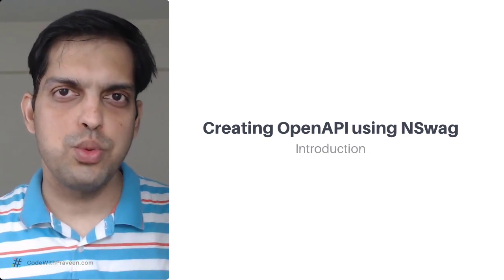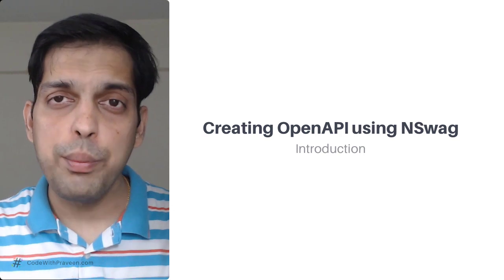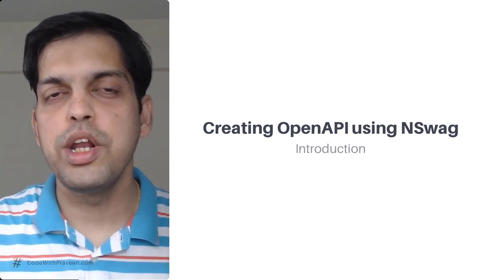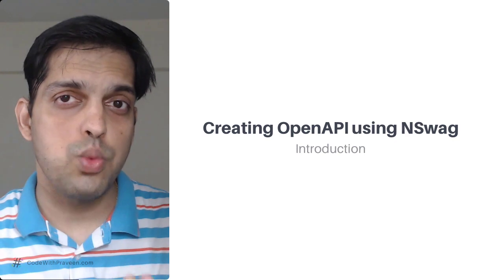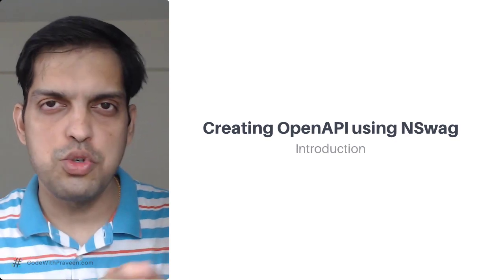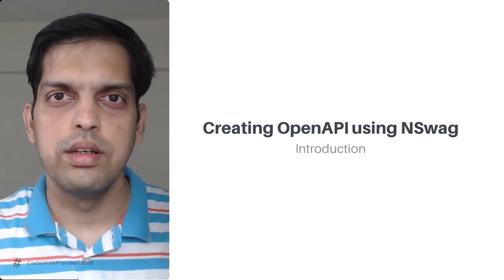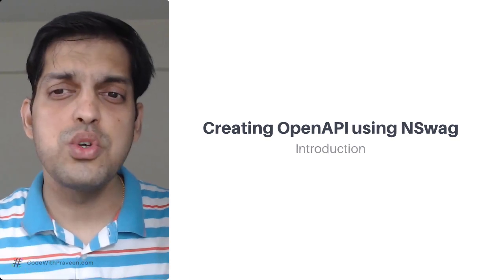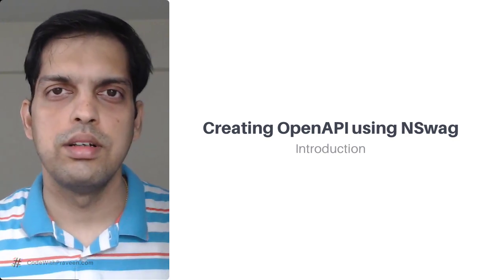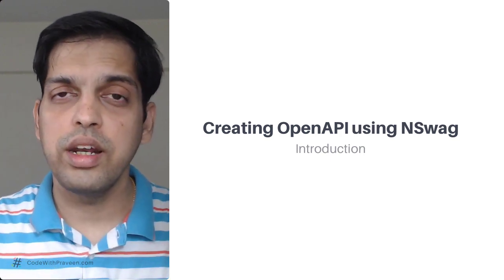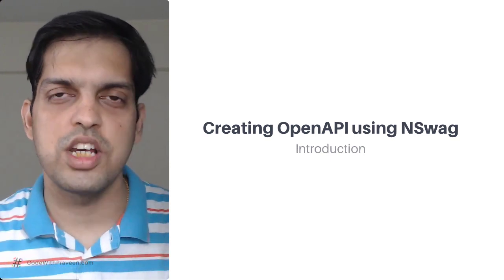Creating OpenAPI using NSwag. As mentioned before, we have two approaches when you want to expose documentation for your Web API project. One is using Swashbuckle, which we have seen in the past two sections, and the next is using NSwag. This is just another package that is going to be extremely similar to Swashbuckle. Let's see about configuring and installing NSwag in your Web API project in this section.